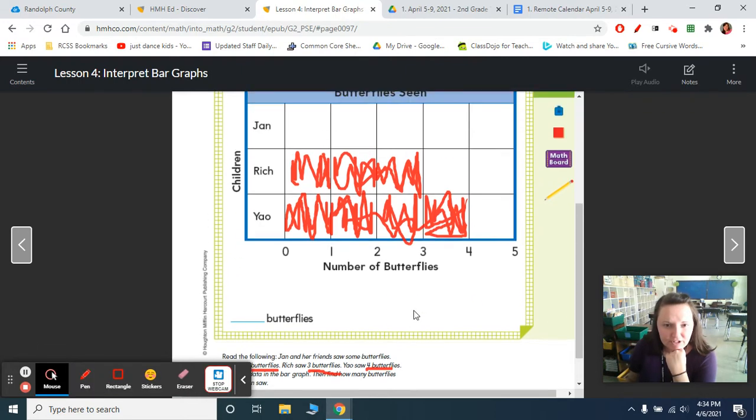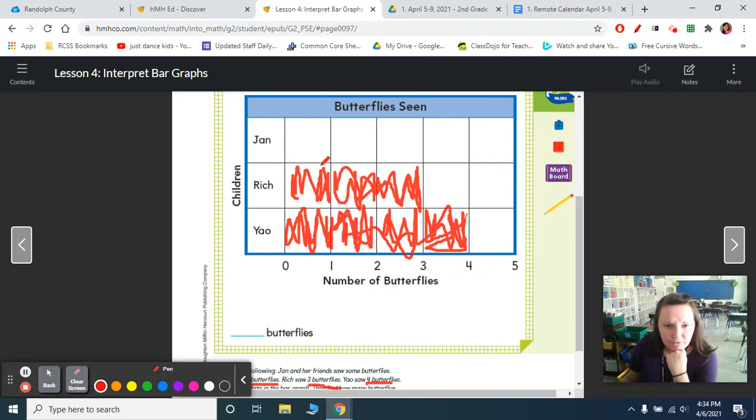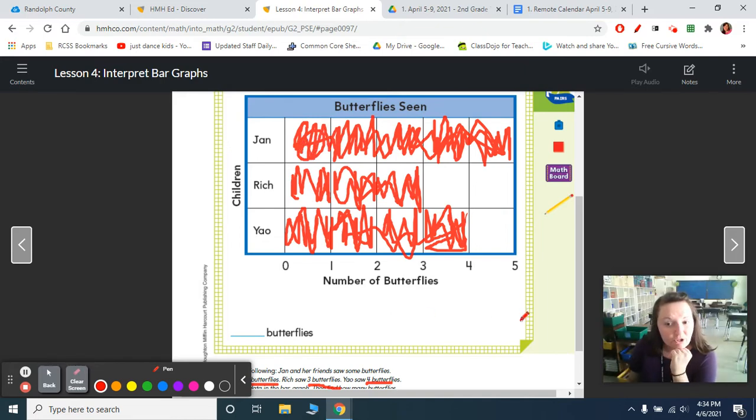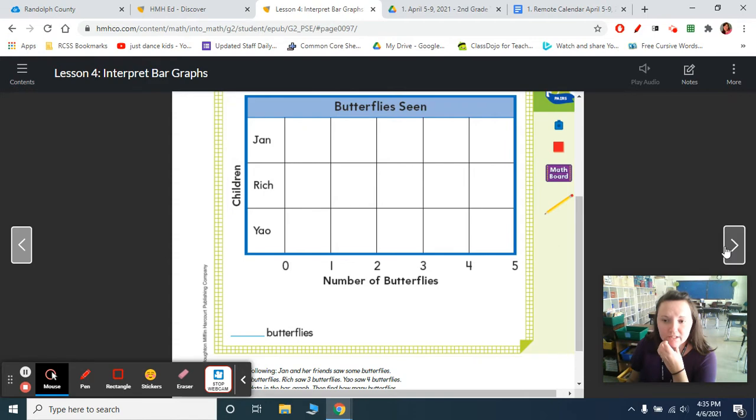Then, it says Jan saw five. So we've got to do one, two, three, four, five. Coloring in five boxes. So the number of boxes corresponds or matches up with how many butterflies they saw. Okay, so now we've got to find how many total there were. We could write an equation, or we could count up the boxes. We have one, two, three, four, five, six, seven, eight, nine, ten, eleven, twelve. So it turns out there are 12 butterflies. So go ahead and write that down. Okay, on to the next one.